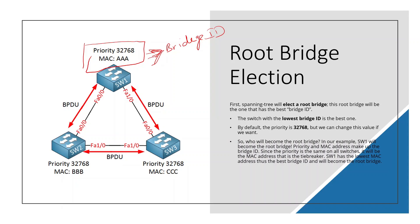We will select a root bridge. We will select based on priority and MAC address. We will select the lowest root bridge. We will select the priority. By default, we will select the default route. We can change it manually. We will select the lowest MAC address to determine the root bridge.